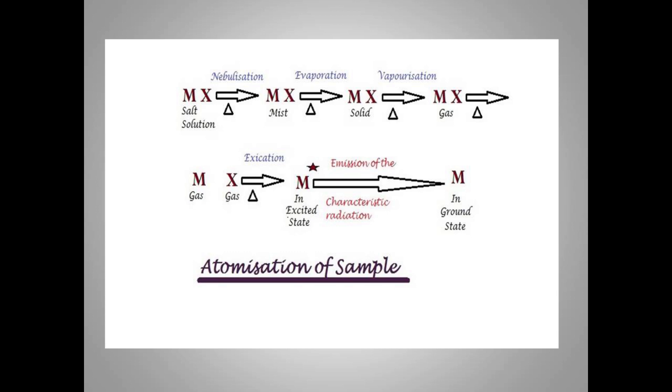In the flame further, this mist is evaporated to the solid state. That is, the solvent in which the salt was dissolved gets evaporated. The solid salt is then vaporized to the gaseous state. The heating continues and the final step occurs here, where the bond between the metal and the salt is broken and they get separated. The salt is now in atomic form. In the atomic form, the atom absorbs energy from the flame and goes to the excited state. From this excited state, it comes back to the ground state. While coming back to the ground state, it will emit characteristic radiation. That's the importance of atomization.